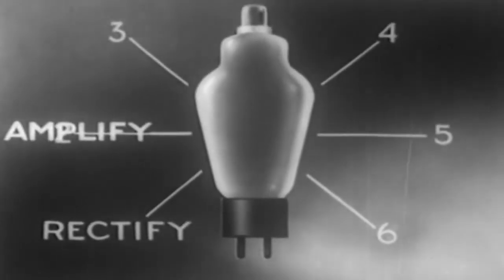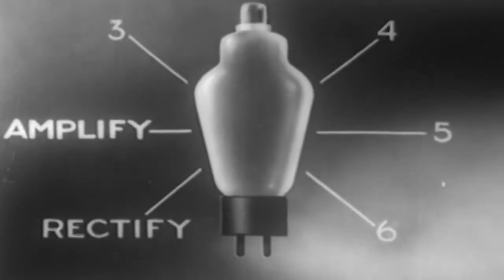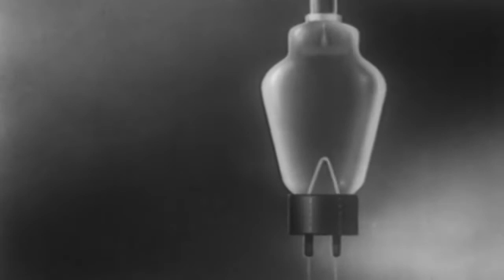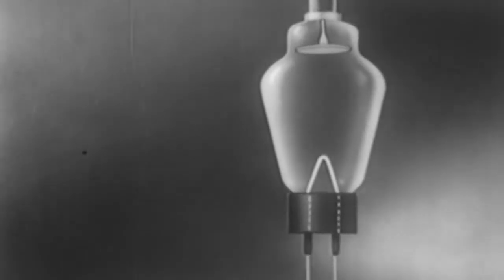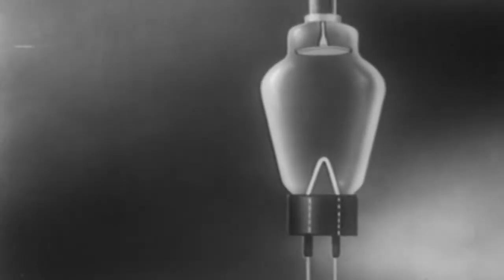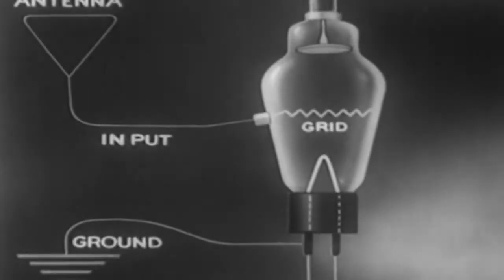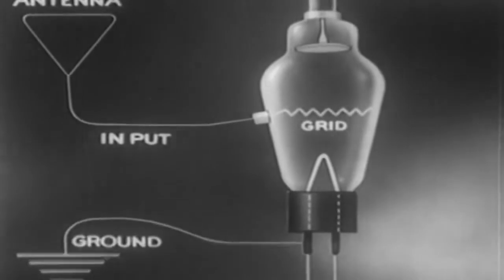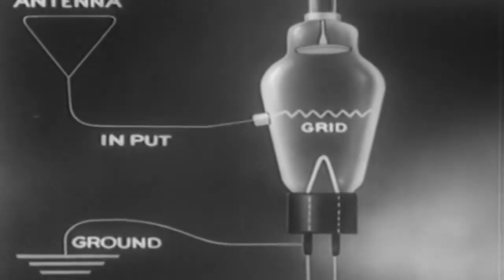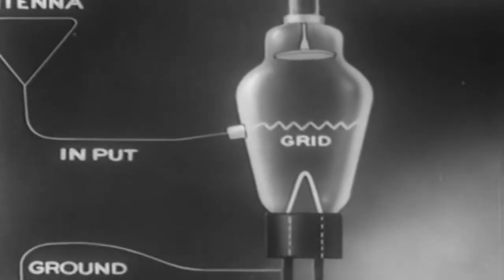The second basic thing we can do with it is amplify. Here's how. Between the cathode and the anode of the two-element tube, which we diagrammed a while ago, we now place a grid. To this grid, we connect an input of some weak voltage, which we wish to amplify, perhaps that of a faint radio signal from halfway around the world. Now let's see what happens.